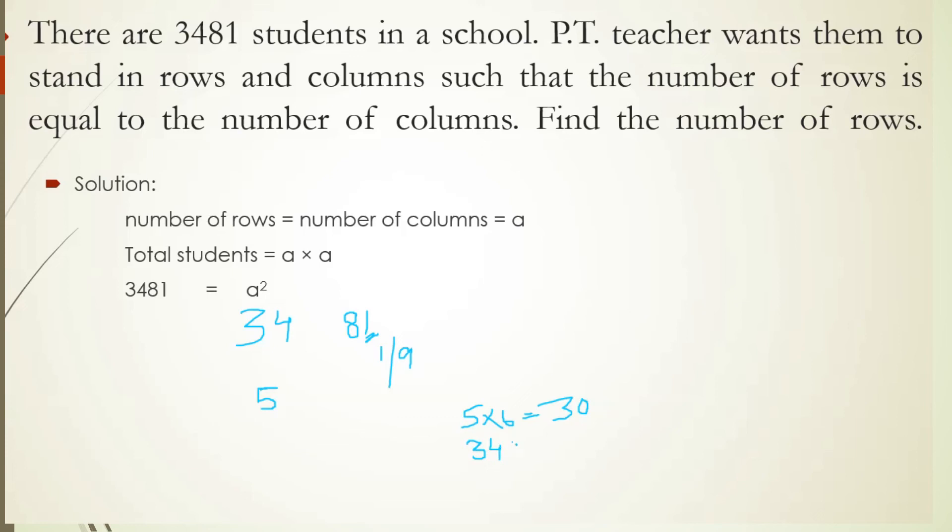Since 34 is greater than 30, the bigger number is chosen as the unit digit. So the unit digit of the square root is 9, and the square root of 3481 is 59. Therefore, there are 59 rows and 59 columns. The answer is 59 rows.